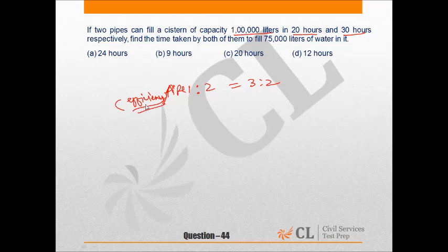When 75,000 liters have to be filled, pipe 1 will fill 75,000 × 3/(3+2), which equals 45,000 liters, and pipe 2 will fill 30,000 liters.